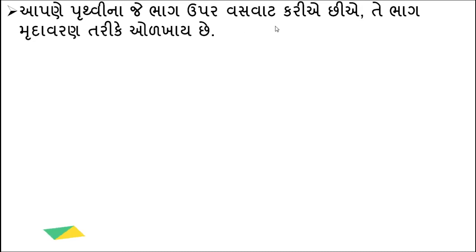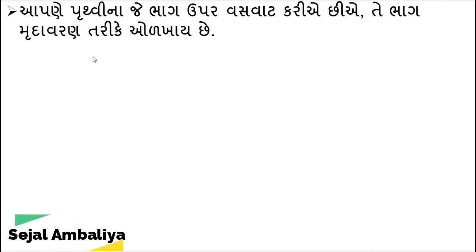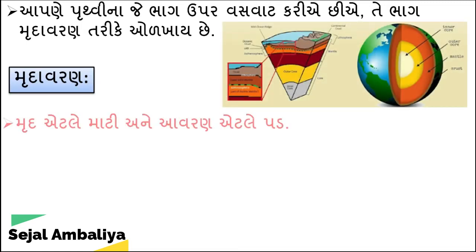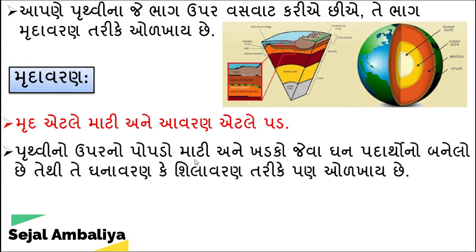આપણી પૃથ્વીના જે ભાગ ઉપર આપણે વસવાટ કરીએ છે તે ભાગ મ્રુદાવરણ તરીકે ઓળખાય છે. જે ભાગ ઉપર આપણે જમીન ઉપર ચાલીએ છે તે ભાગ ને મ્રુદાવરણ કેવાય છે. મ્રુદ એટલે કે માટી અને આવરણ એટલે પડ - માટી નું બનેલું પડ છે તે મ્રુદાવરણ કેવાય છે.